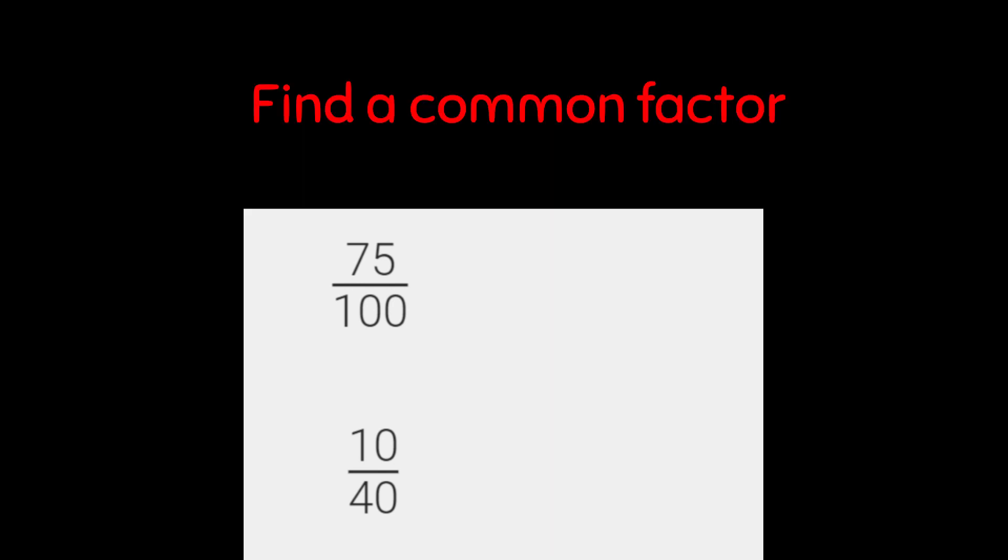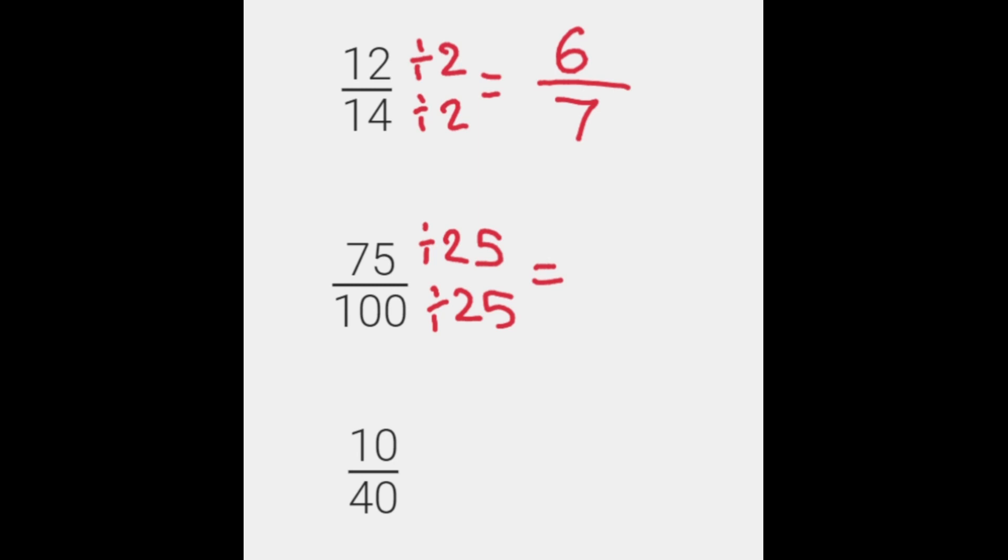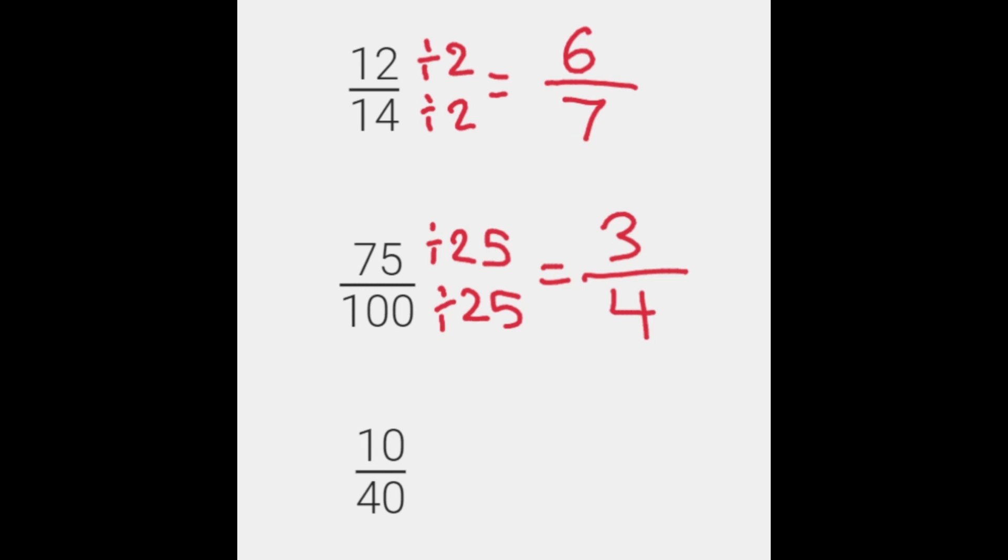We're going to do 75 over 100. Now, we're going to divide 75 and 100 by 25. Whatever you do at the bottom, you must do at the top. How many times does 25 go into 75? It goes in 3. How many times does 25 go into 100? It goes in 4. So 3 quarters is equivalent to 75 over 100.